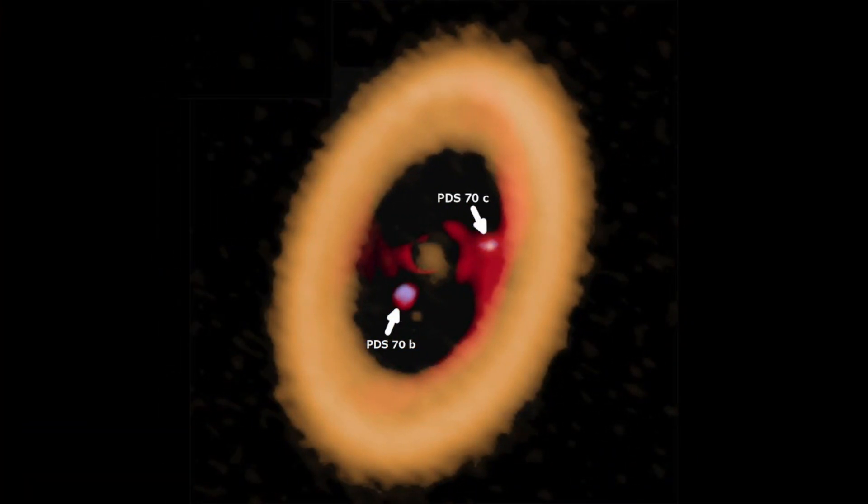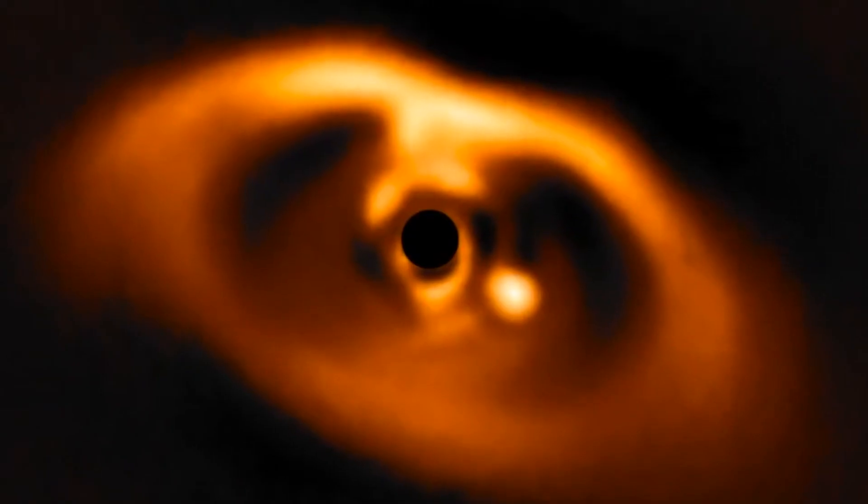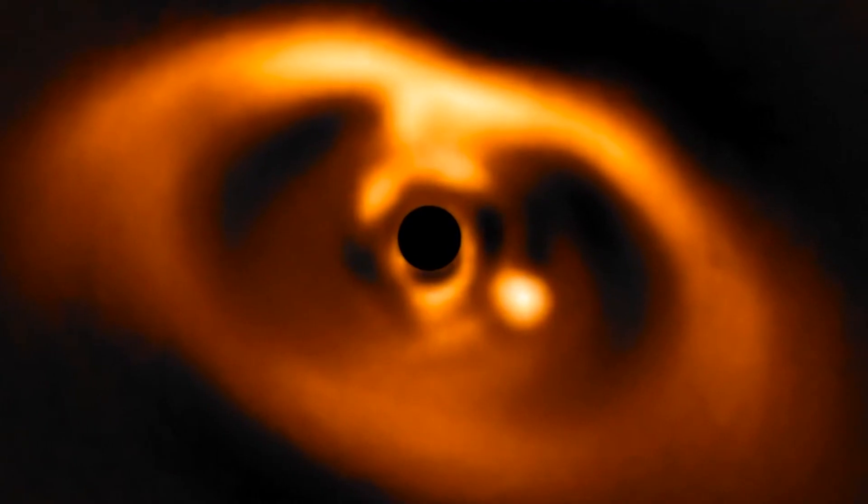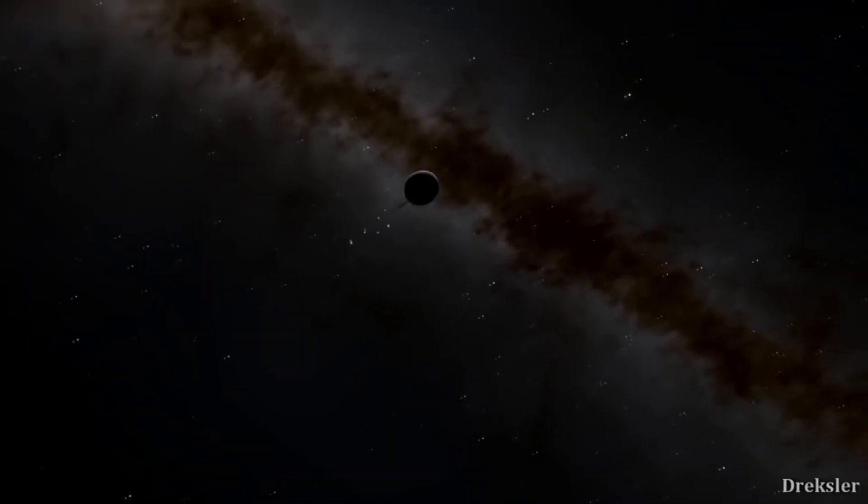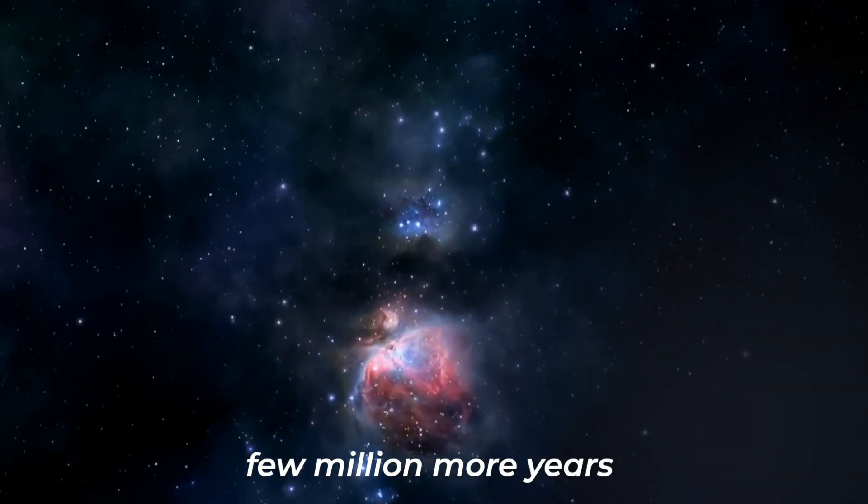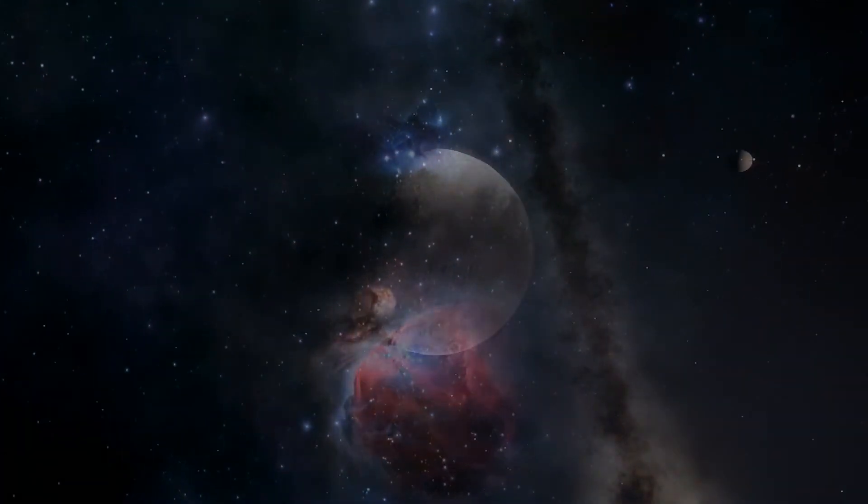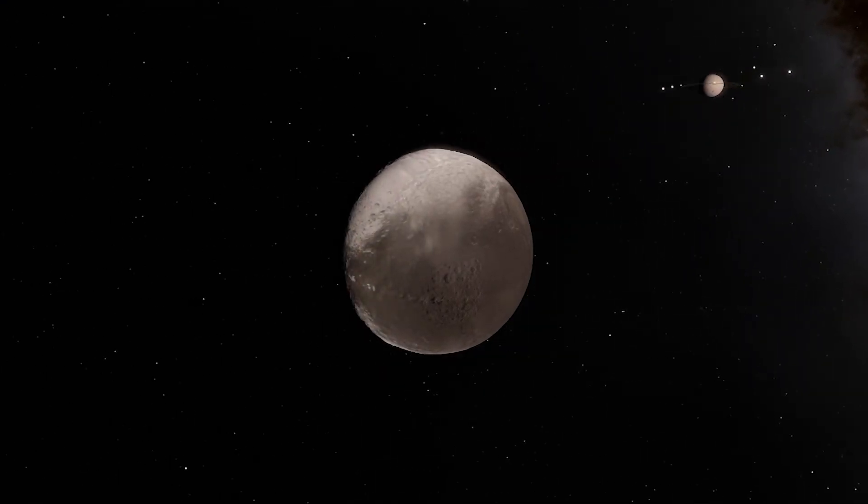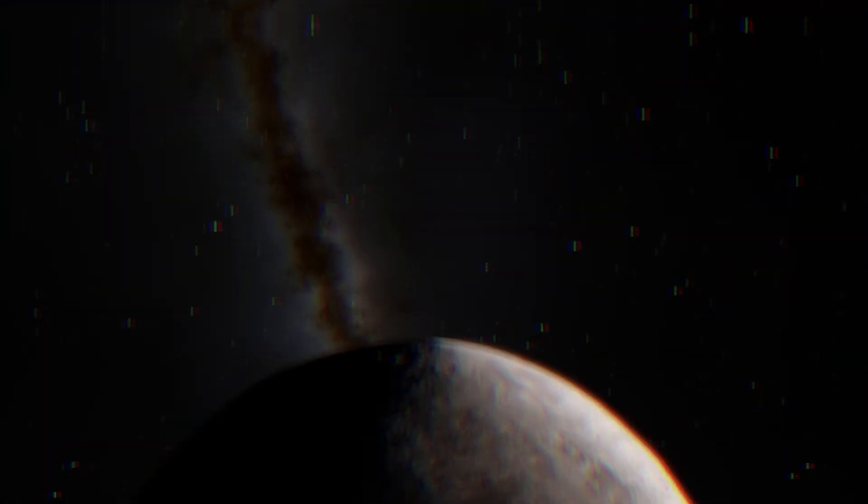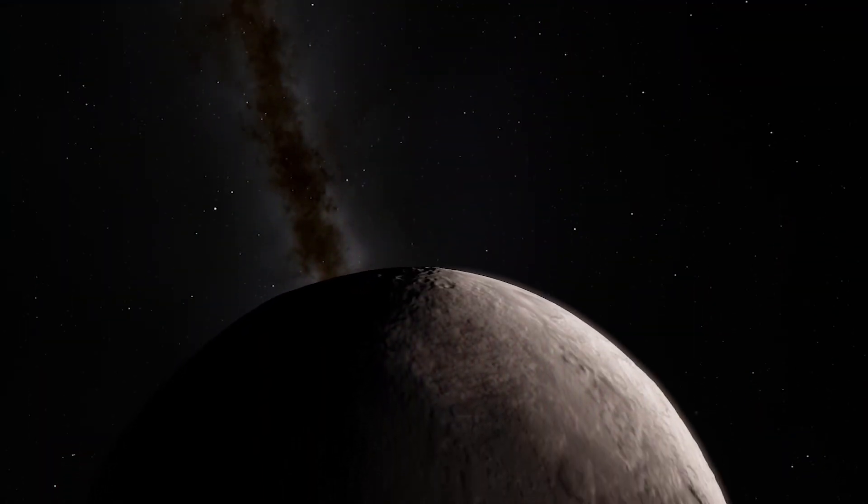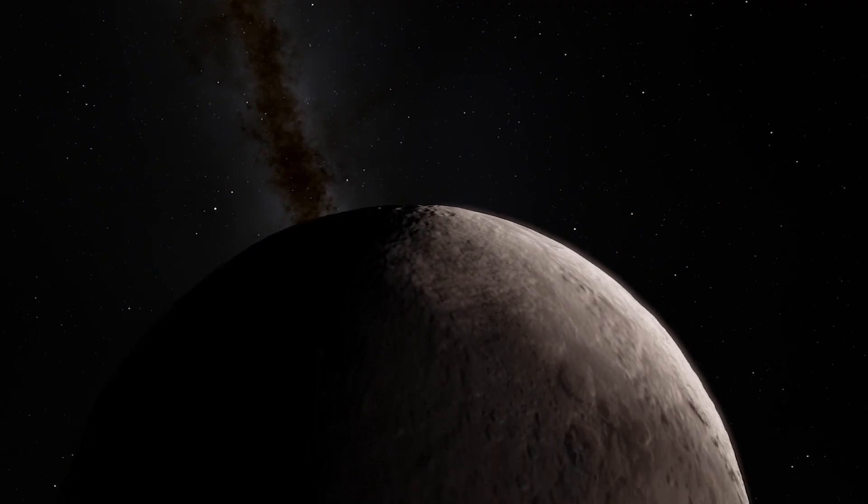While PDS 70c is probably still growing, it is very slow, and it probably won't grow much larger than it already is. The same goes for whatever moons might be growing within the dusty circumplanetary ring. The hidden moons are most likely close to being fully formed. In a few million more years, the dust will all have been collected by these moons or have fallen down onto the planet itself.